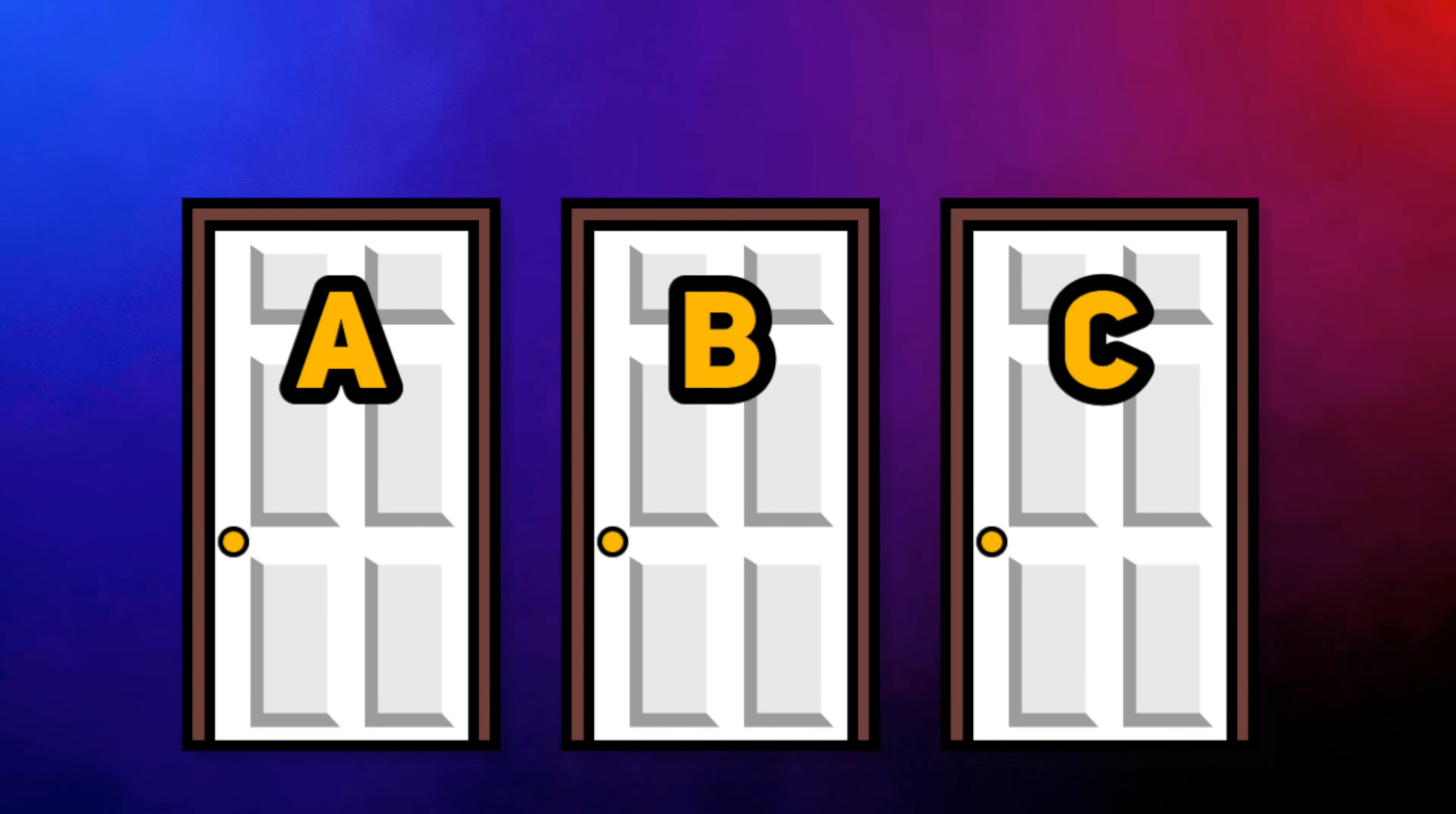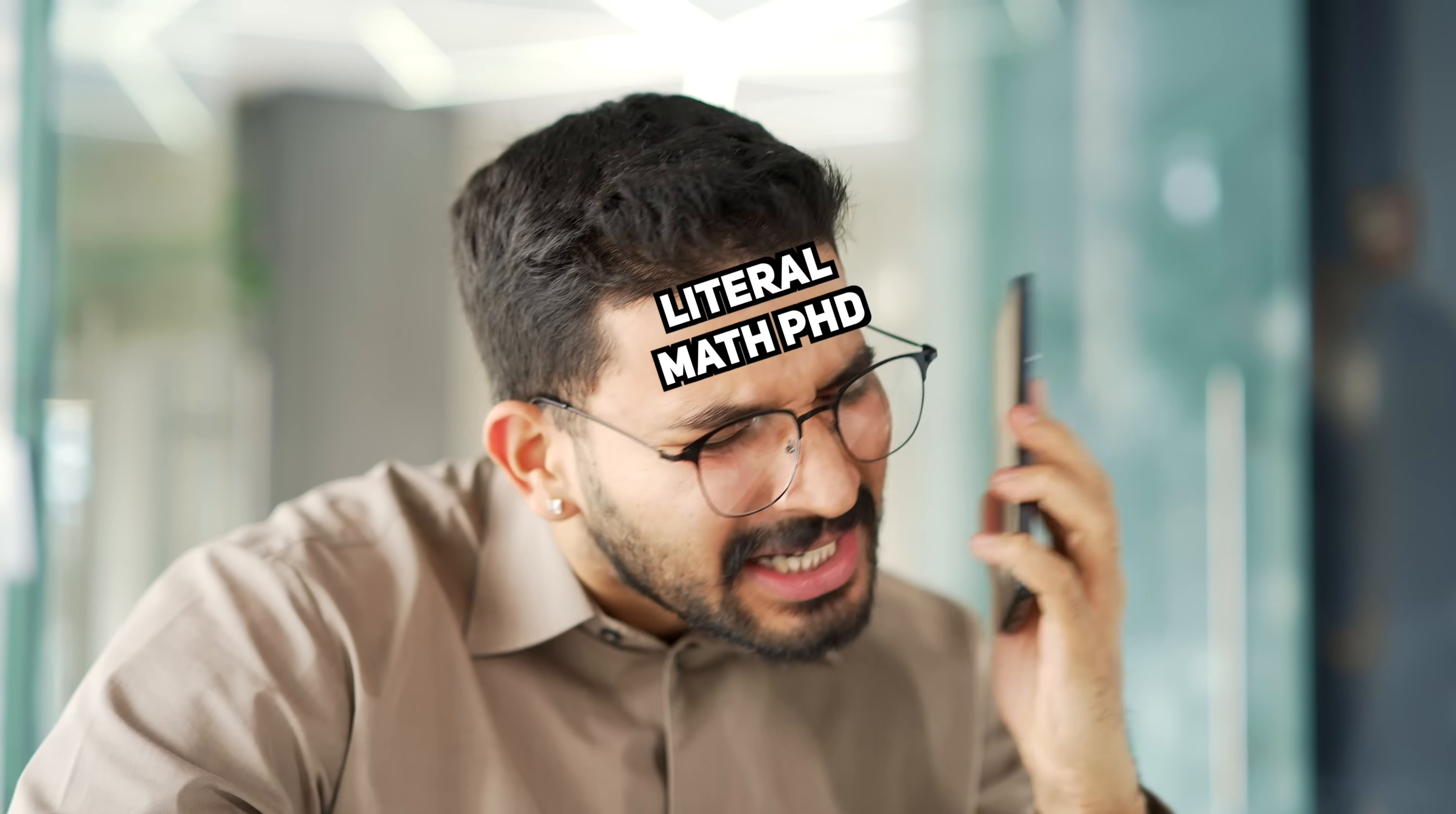The Monty Hall problem is one of the most infamous riddles in probability. At one point in time, it fooled thousands of people at once, some of them having literal PhDs in math. To this day, Monty Hall still messes people up.